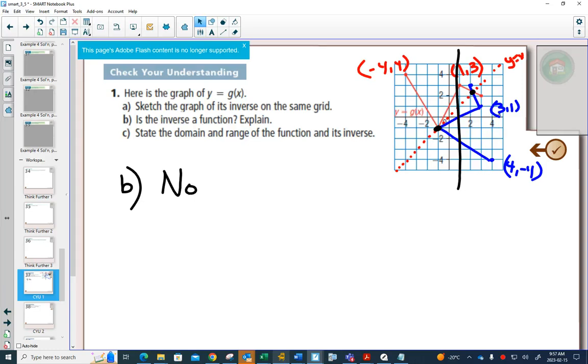So the red one is a function because if I drag this line across, I never hit the red graph in more than one point. But the blue one is not a function because there are many places where I have the vertical line hit more than one point. So, no.